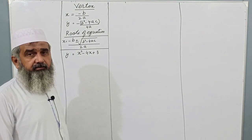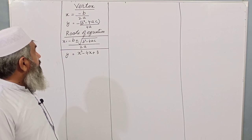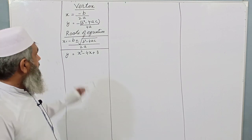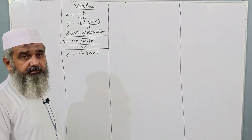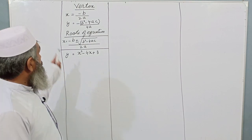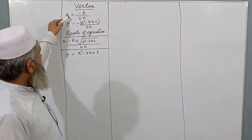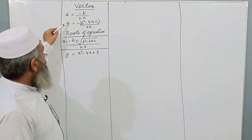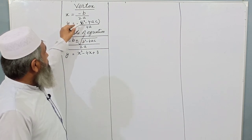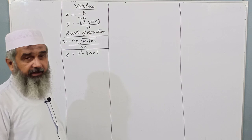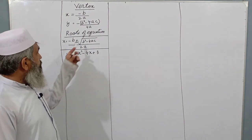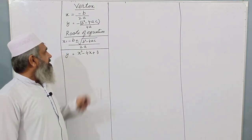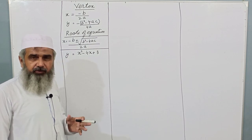Dear students, we are going to discuss vertex and roots of equation. We have a coordinate of vertex: x is equal to minus b upon 2a, and y is equal to minus b squared minus 4ac upon 4a. And for roots of equation, x is equal to minus b plus minus under root of b squared minus 4ac upon 2a.